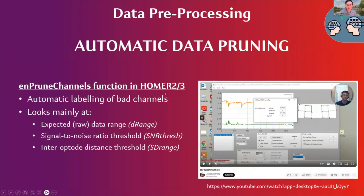If you want to do this more objectively and rapidly, use the automatic prune function — the ENprune channel function from Homer 2, which automatically labels bad channels by looking at the expected raw data range, the signal-to-noise ratio threshold, or the interoptode distance threshold. You can adjust all of these values and see what it does to your data. There is a very good YouTube video by Jonathan Perry explaining in detail what these raw data ranges, signal-to-noise thresholds, and interoptode distance thresholds do and how to implement this in Homer 2.